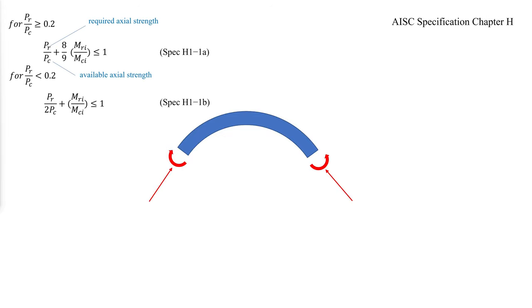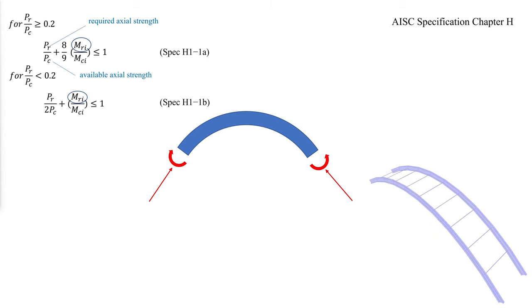The strength of curved members under combined axial and flexural loads can be calculated with AISC Specification Chapter H. The required in-plane flexural strength should be based on a second-order analysis or an amplified first-order moment as discussed. Member strength should be verified at each unbraced segment along the length, and because the axial load can vary along the member, careful selection of the proper axial load ratio PR over PC is essential.